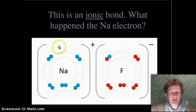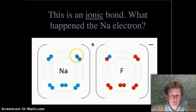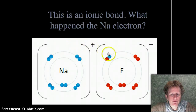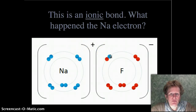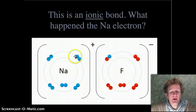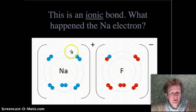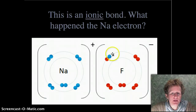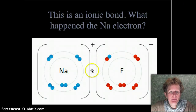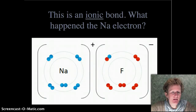Here's an example of an ionic bond. The electron from sodium went over to fluorine and stays with fluorine. Remember, ionic bonds are taken — the electrons are taken, not shared. This electron from sodium comes over to fluorine, and notice this does not show that the atoms are connected. They're separate. That's an ionic bond.